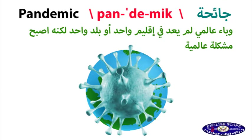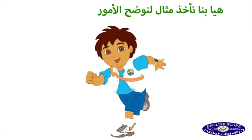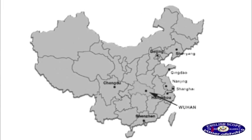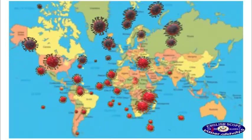It's no longer in one region or one country, but it became a worldwide problem. Let's have an example to make things clear: in China, the coronavirus started with an outbreak in Wuhan. Over time it became an epidemic, and soon it became a pandemic.